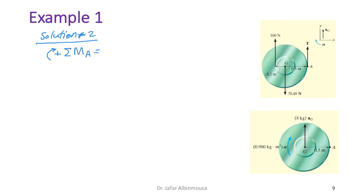The left-hand side comes from the free body diagram and the right-hand side from the kinetic diagram. From the FBD: the weight causes counterclockwise rotation (negative) with distance 0.5 m, and the 100 N force causes clockwise rotation (positive).